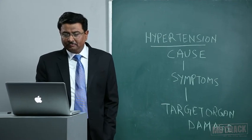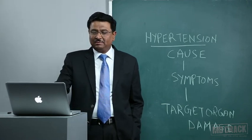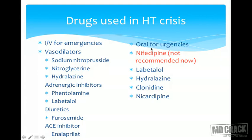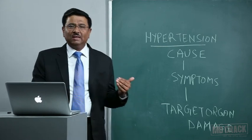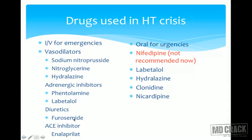Drugs used in hypertensive crisis: for emergencies, IV options include sodium nitroprusside, nitroglycerin, or hydralazine. In the adrenergic inhibitor group, phentolamine or labetalol can be used. IV furosemide can be used as a diuretic. In the ACE inhibitor category, enalaprilat IV can be used — note that enalapril is a prodrug that is converted to enalaprilat, the active drug. For hypertensive urgencies, oral nifedipine was once commonly used but is no longer recommended. Labetalol is the drug of choice for urgencies; alternatively, hydralazine, clonidine, or nicardipine can be used.